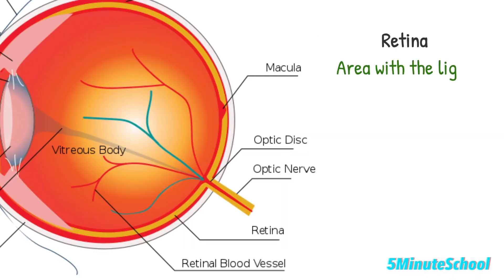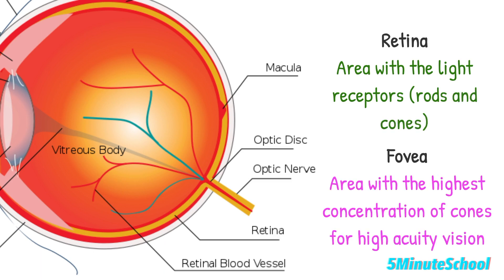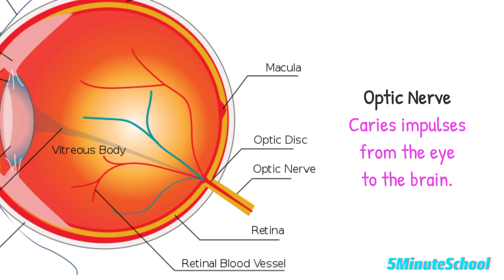The retina contains the light receptors, the rods and cones. The fovea is an area which provides the clearest vision, so there is a higher concentration of cones in this area. The optic nerve is the nerve which carries impulses from the eye to the brain.